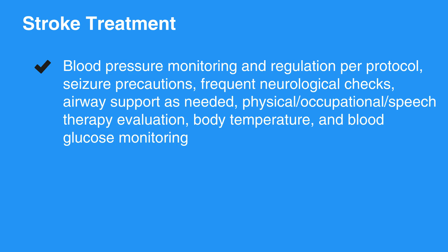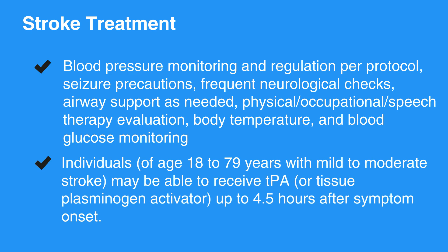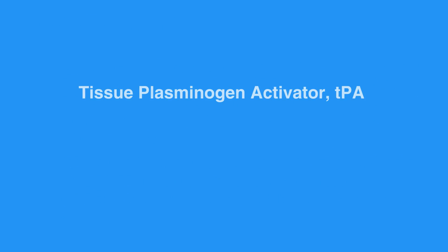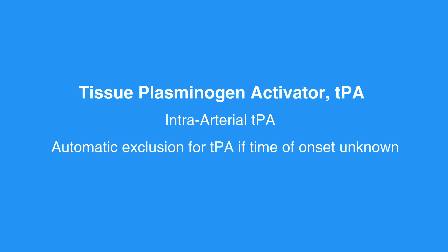Individuals who received fibrinolytic therapy should be followed for signs of bleeding or hemorrhage. Certain individuals aged 18 to 79 years with mild to moderate stroke may be able to receive TPA, or tissue plasminogen activator, up to 4.5 hours after symptom onset. Under certain circumstances, intraarterial TPA is possible up to 6 hours after symptom onset. When the time of symptom onset is unknown, it is considered an automatic exclusion for TPA.